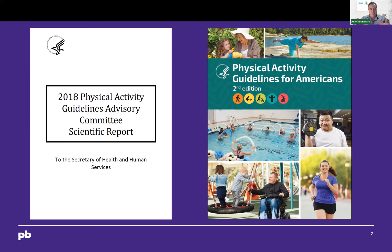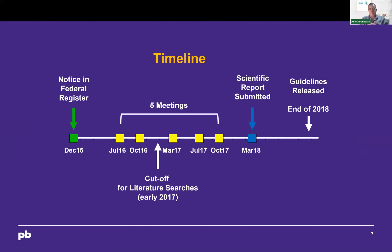I was a member of the committee. I'm not speaking on behalf of the committee; I'm just giving you my highlights and some takeaways from my involvement. I wanted to lay out the timeline so everyone can understand where we were at the time. They put the notice in the Federal Register in December of 2015 that these guidelines were going forward. The committee had five different public meetings over time, and in March of 2018 we submitted our report. The cutoff for the literature searches was in early 2017, generally January or February for most of the subcommittees.